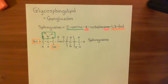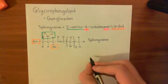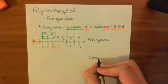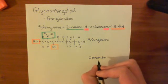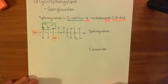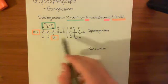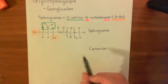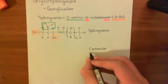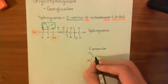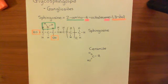Now, how do you get a ganglioside from sphingosine? To understand that, we need to first go through another type of molecule. We need to first discuss what a ceramide is, because a glycosphingolipid is basically a modified ceramide. So let's talk about ceramides first. Ceramides are based on the sphingosine structure — what you do is add a carboxylic acid group with some arbitrary R group.